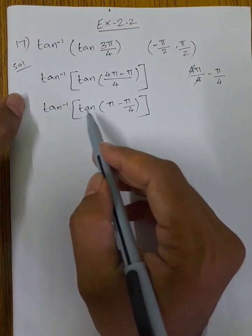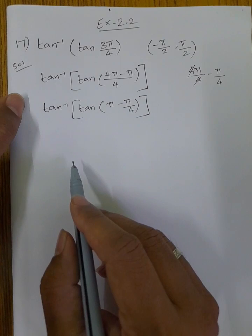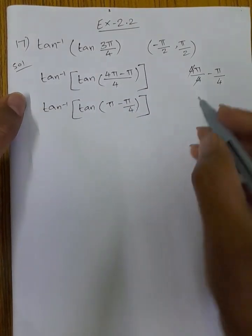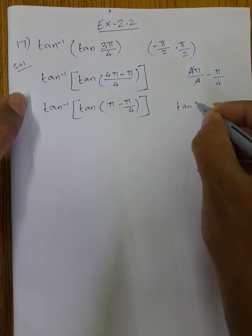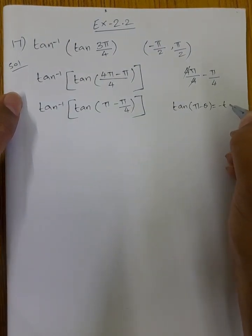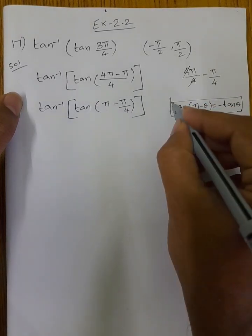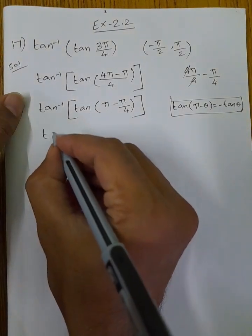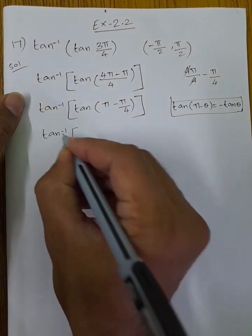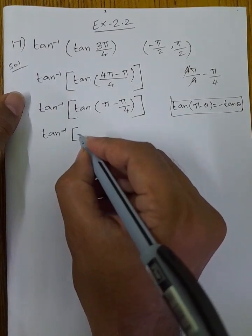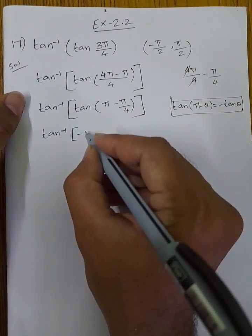So tan inverse of tan(π minus π/4). Now we use the identity: tan(180° minus θ), that is tan(π minus θ), equals minus tan θ. So tan(π minus θ) is equal to minus tan θ.